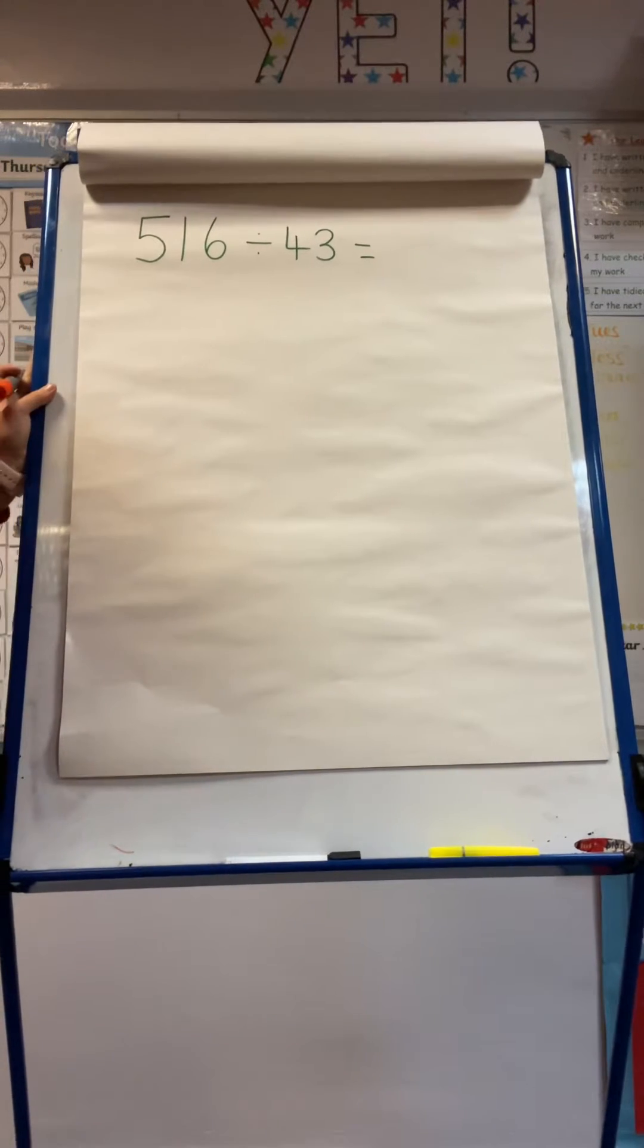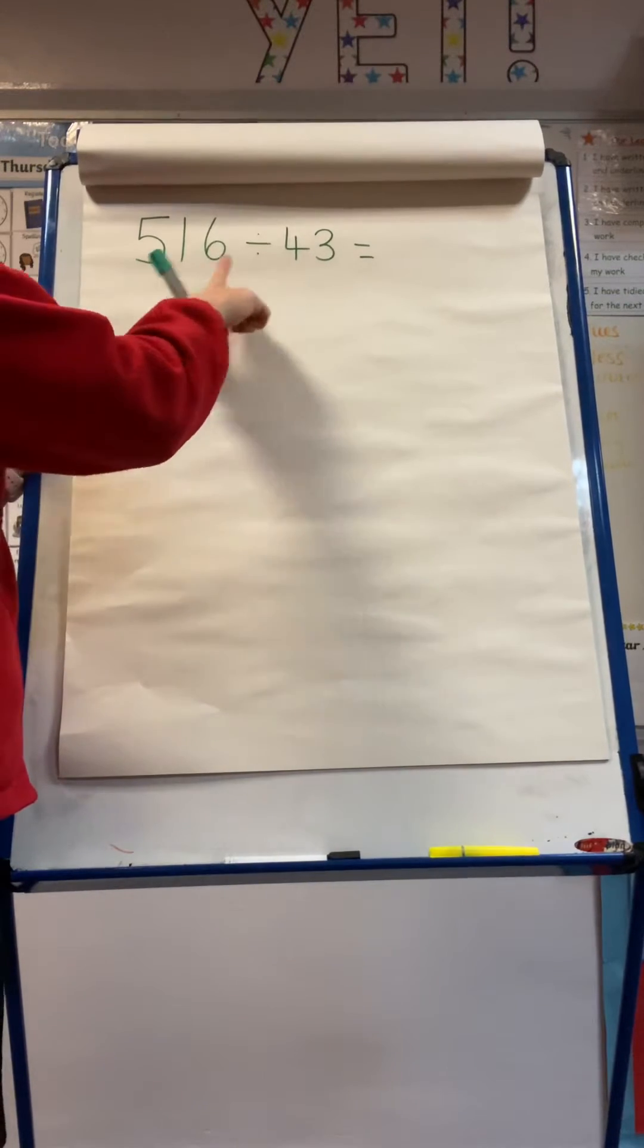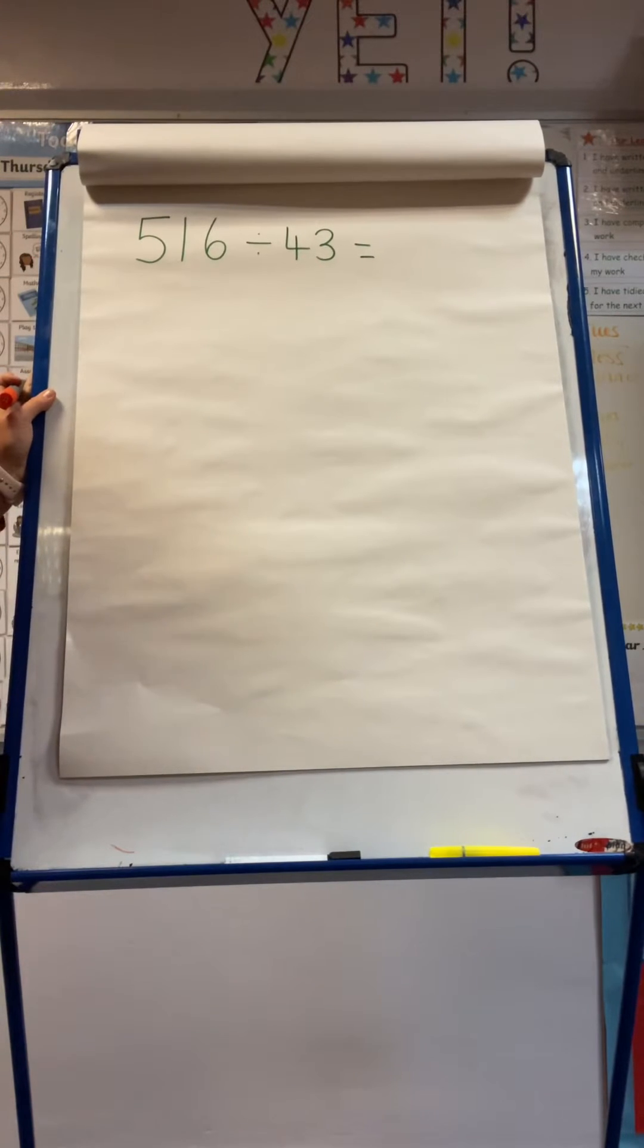We're going to look at using the chunking method to divide a three-digit number by a two-digit number. We're going to use our magic seven.